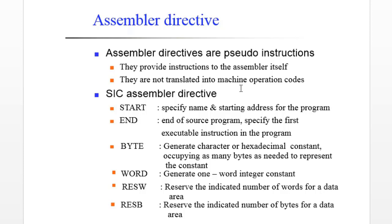Wherever you locate END in your program, that indicates that it is the last statement of your program. Along with END, there is also a need to specify the first executable instruction in the program. We are going to convert this program into object code, and after conversion, from where do we start its execution? That address — the first instruction's label or address — will be specified in the END directive.